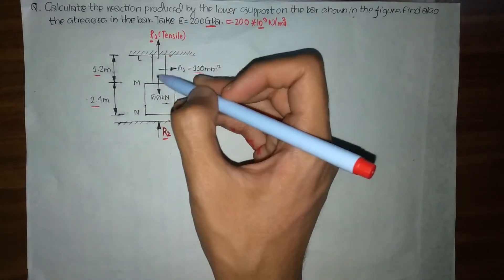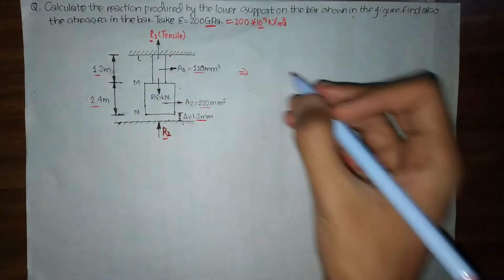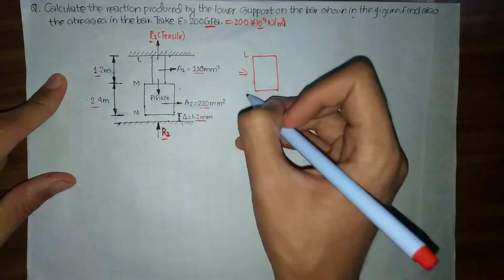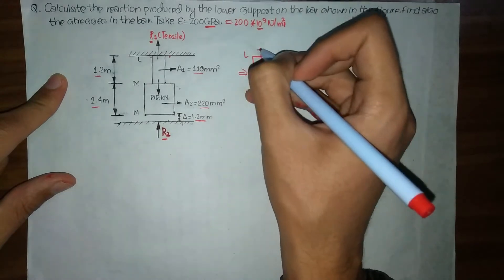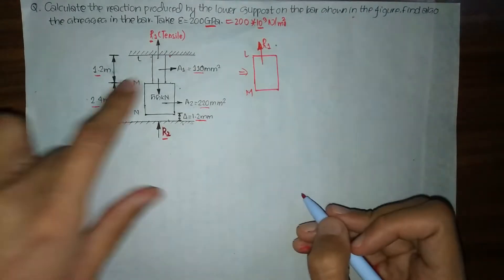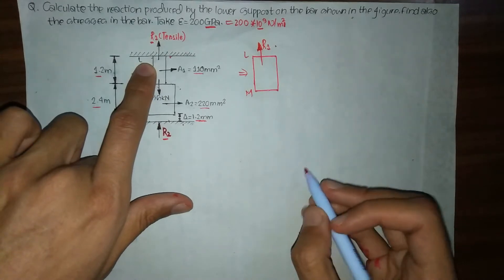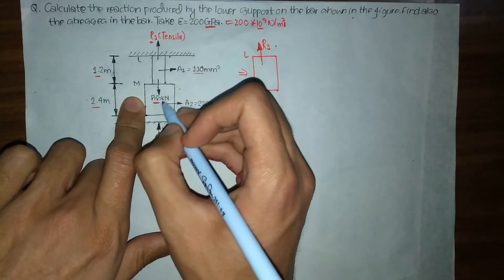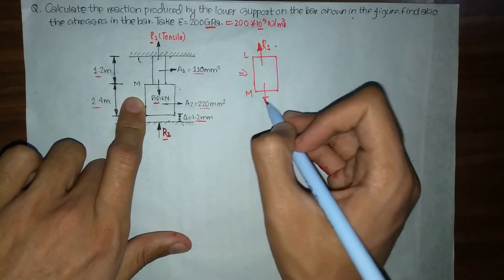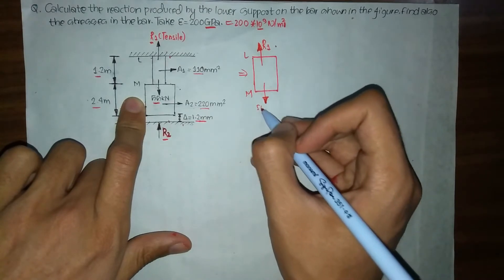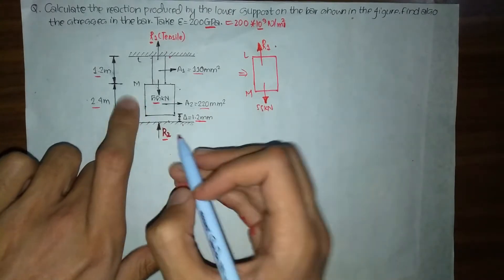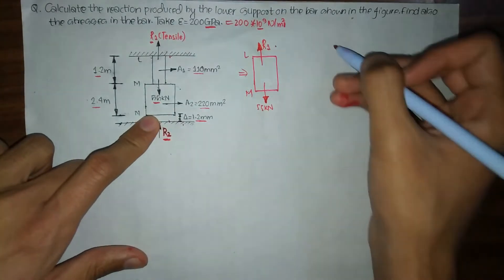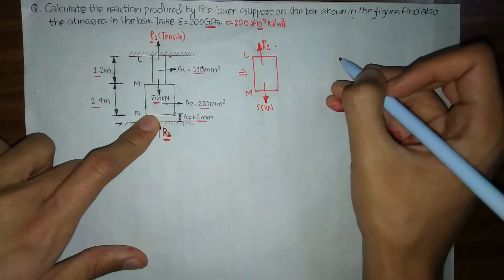To explain this, I'm going to draw portion LM. For portion LM, there is a tensile force R1 acting upward due to the upper support. Acting downward there is a tensile force of 55 kilonewtons, and there is also a reaction force R2 acting vertically upward.